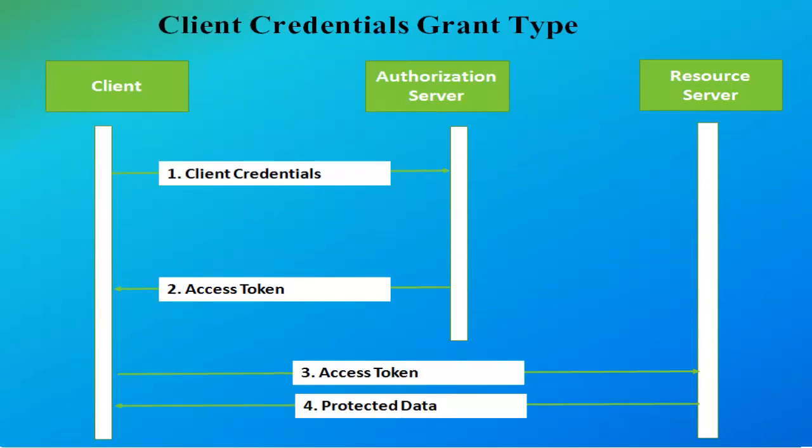Client credential grant type. The client credential grant type is used when there is no resource owner participation in the flow, either with the authorization server or with the resource server. No browser interaction is required in this grant type. Here the flow is simple: the client requests an access token by sending the client credentials to the authorization server. The authorization server validates the client credentials and returns an access token. The issued access token is then given to the resource server to validate and avail the protected data.